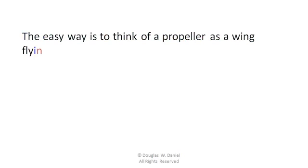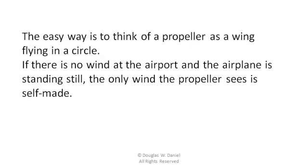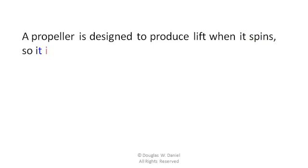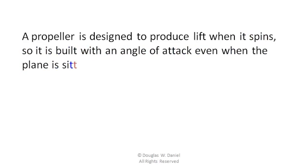The easy way is to think of a propeller as a wing flying in a circle. If there is no wind at the airport and the airplane is standing still, the only wind the propeller sees is self-made. The simplest propeller, the kind you will see on the first airplane you fly, is a single piece of aluminum. A propeller is designed to produce lift when it spins, so it is built with an angle of attack even when the plane is sitting still.